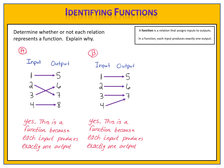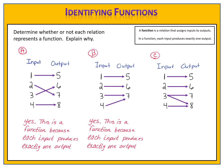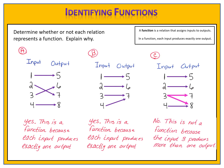So what would it look like if a mapping diagram showed a relation that was not a function? In Exercise C, the input 1 produces the output of 5. The input 2 produces the output of 6. The input 3 produces two different outputs, 7 and 8. And the input 4 produces the output of 8. The problem is here with the input 3. The input 3 produces two different outputs, 7 and 8. In a function, your inputs can only produce one output. Therefore, this is not a function, because the input 3 produces more than one output.